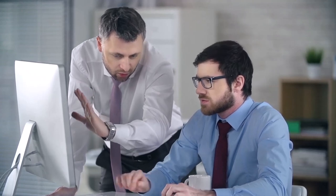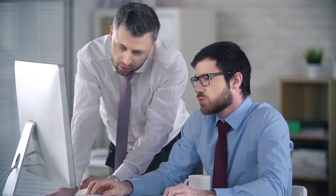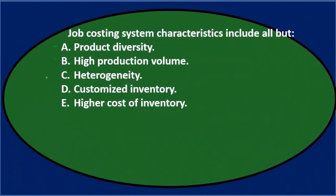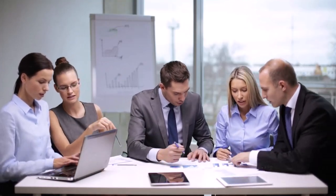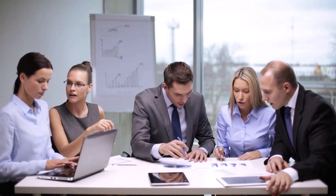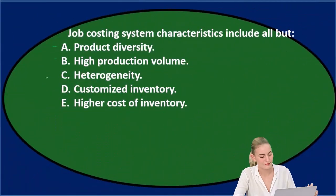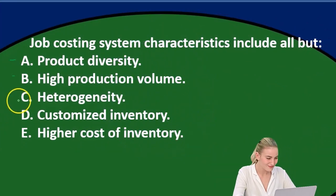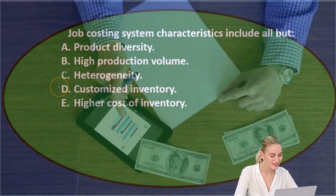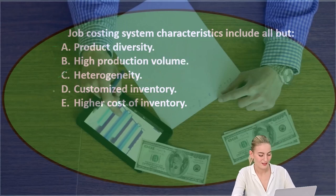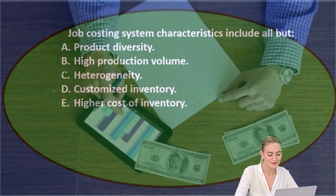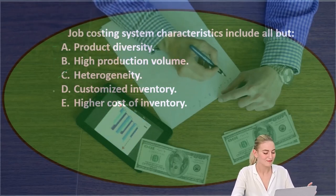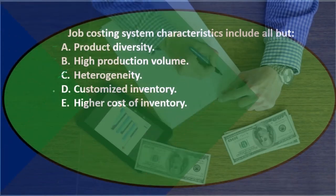This problem implies a contrast against the process cost system, so we have to keep that in mind. Some job cost systems may have more or less heterogeneity, but compared to a process cost system, there's more difference in types of inventory — so heterogeneity is a characteristic. Option D, customized inventory, is also more characteristic of job costing compared to process costing.